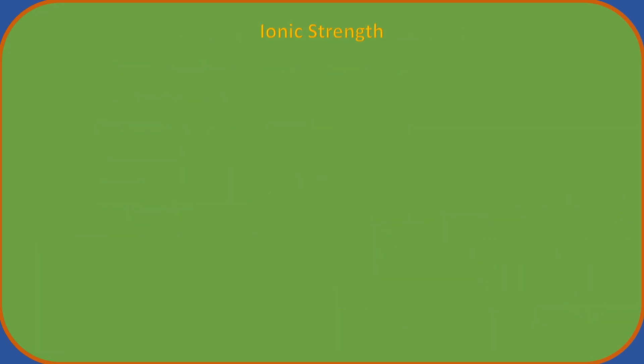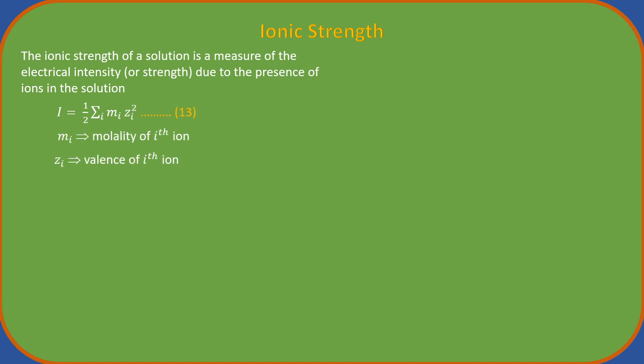Another concept that we cannot ignore while studying activity is the ionic strength, represented by mu or uppercase letter I. The ionic strength of a solution is a measure of the electrical intensity or strength due to the presence of ions in the solution. It is given as half of the sum of all the terms obtained by multiplying the molality of each ion by the square of its valence. In other words, ionic strength is the collective measure of both charge on the ion as well as its concentration in the solution.